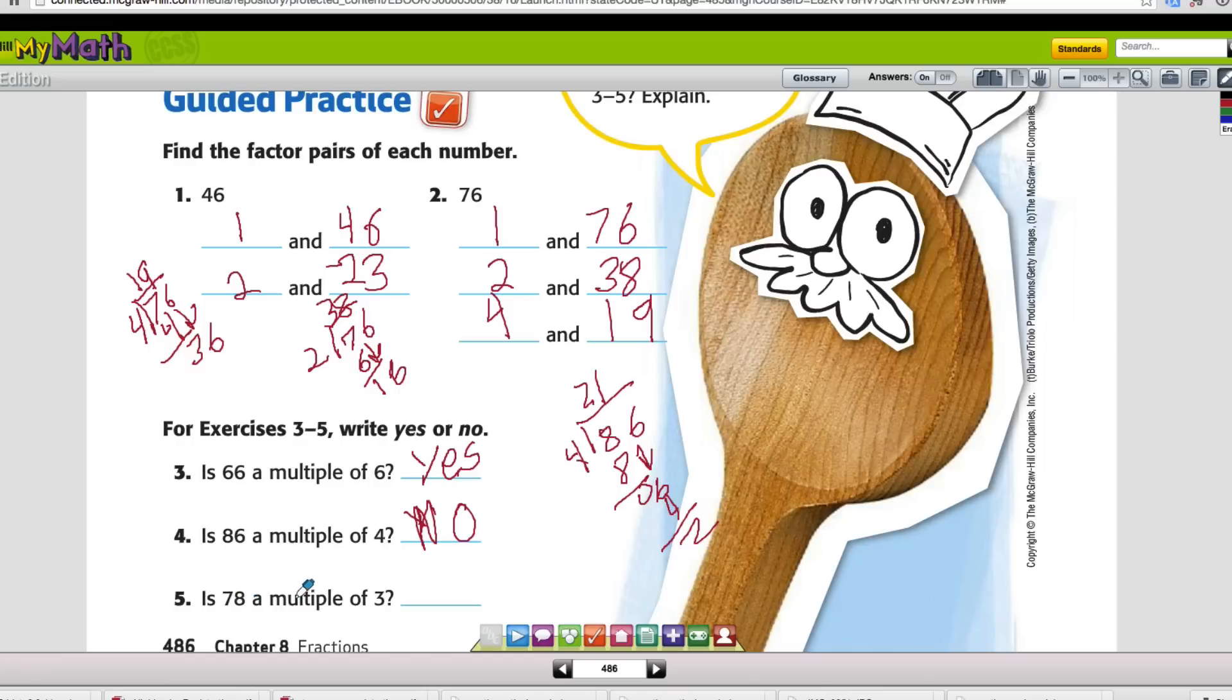Now let's look at this one. Remember that divisibility rule I taught you for 3. If we add 7 plus 8, that equals 15. And 3 times 5 equals 15. So we don't even have to do the division problem. We don't have to list out the multiples. We just know based on our divisibility rule that 78 is a multiple of 3.